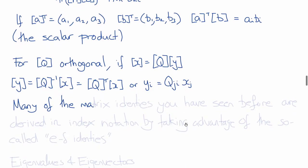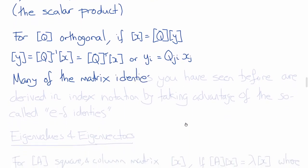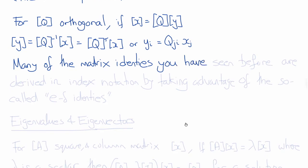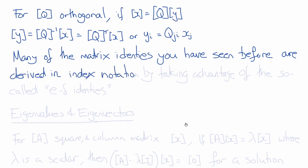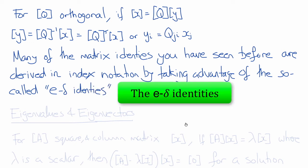Many, perhaps all, of the matrix identities you've seen before can also be derived in index notation by taking advantage of the so-called E-delta identities. I'll ask you to look at a handout of these E-delta identities and review them. These are ideas you've already seen, but they are the algebraic tools that enable you to derive matrix relations using index notation, which you probably haven't seen before.